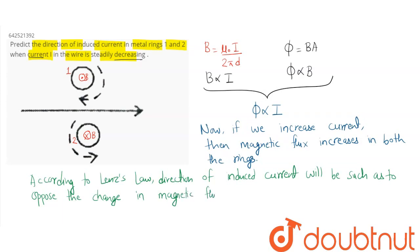So here we can say, in ring 1, since magnetic flux is increasing outside, the current here will be such that it opposes this change. So in the first ring, the current will be in the clockwise sense.